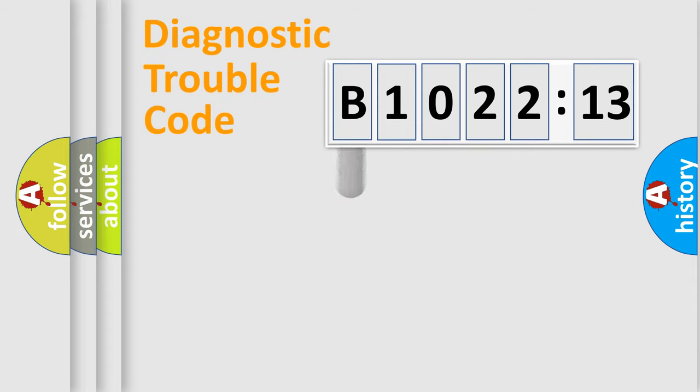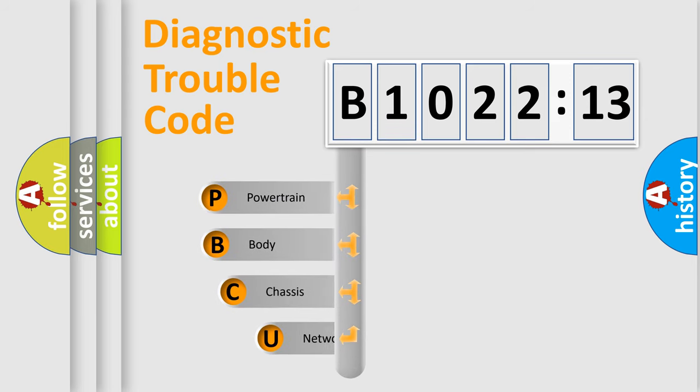First, let's look at the history of diagnostic fault code composition according to the OBD2 protocol, which is unified for all automakers since 2000. We divide the electric system of automobiles into four basic units.